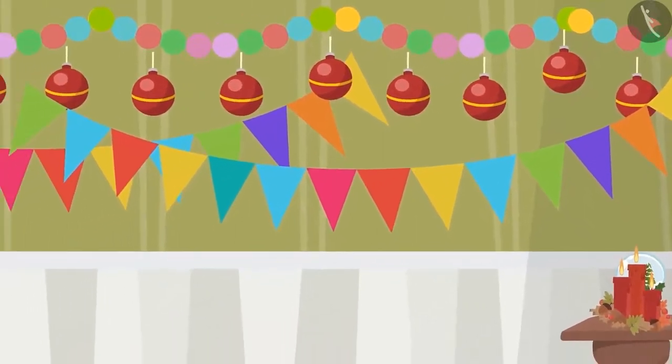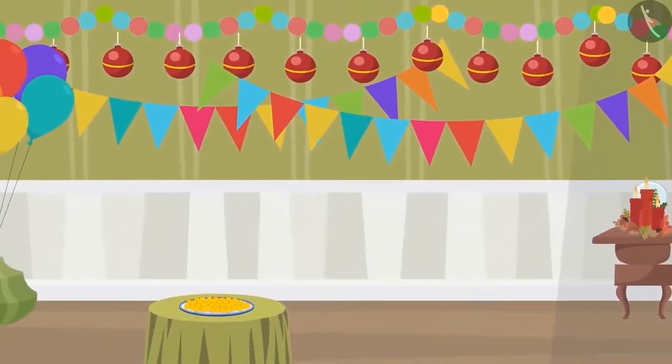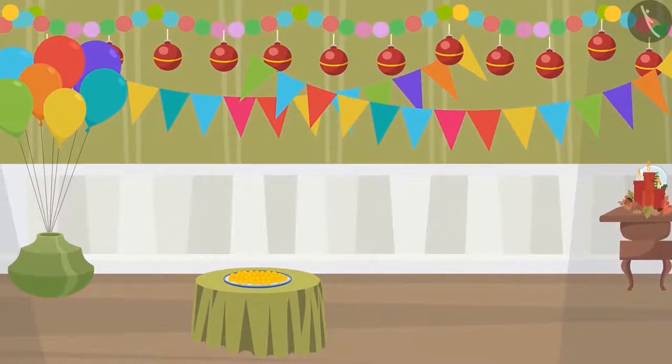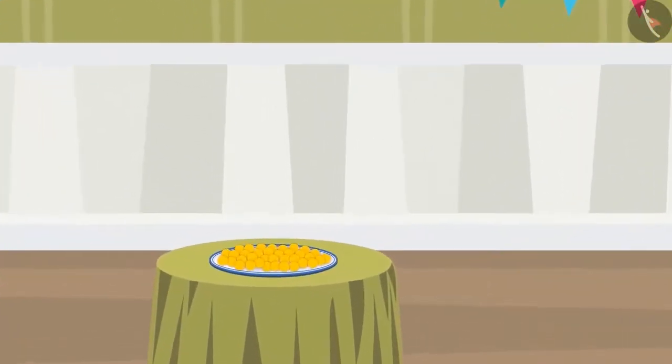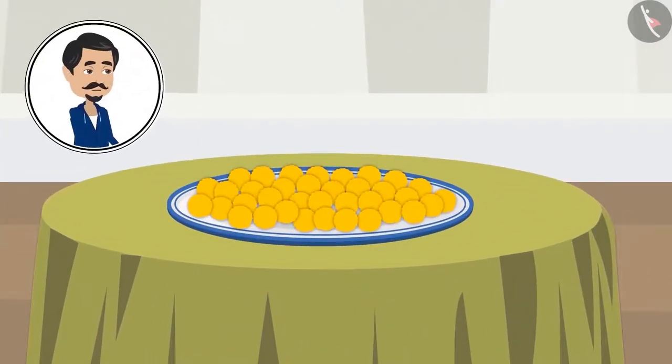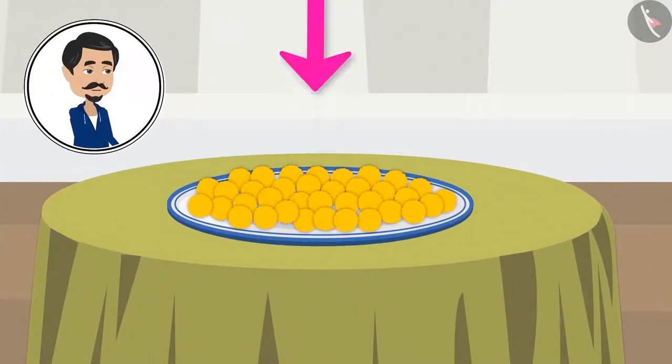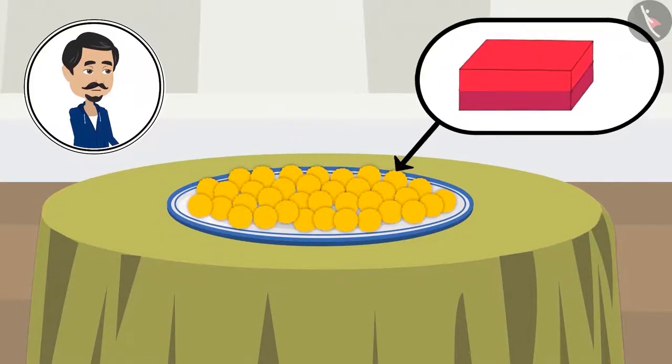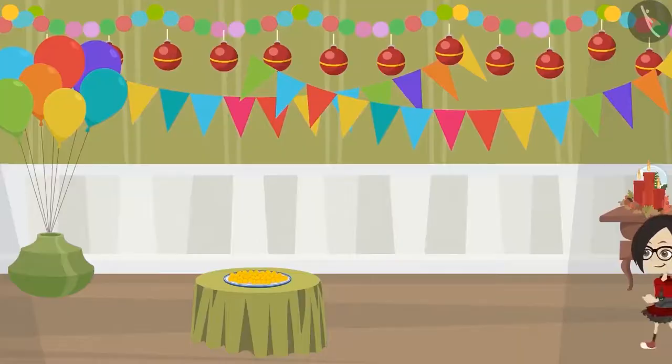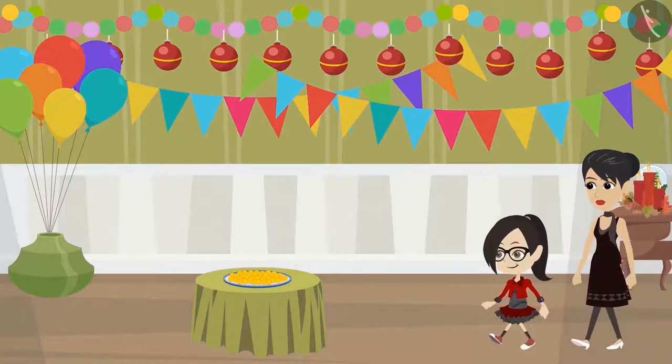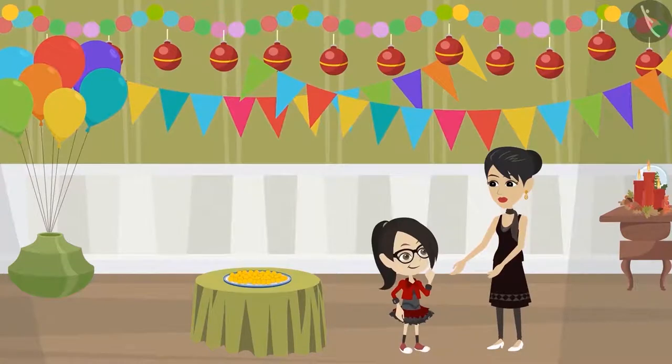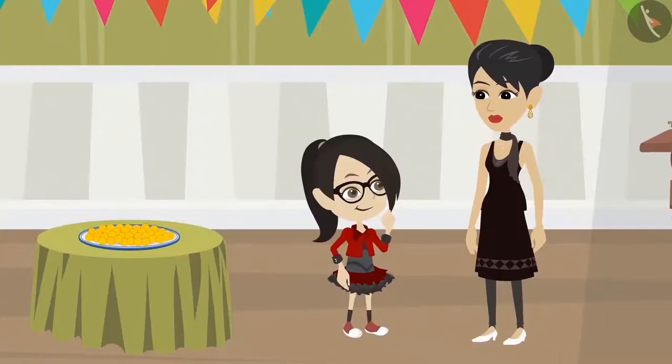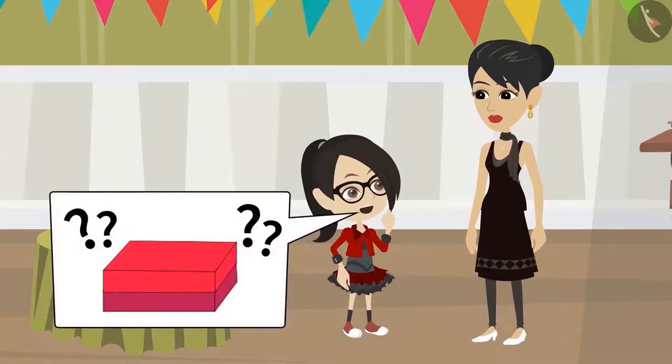Today there is a party at Vandana's house, and some guests are going to come. Ladoos are to be given to the guests on the way back. Papa brought the ladoos from the market but forgot to bring the boxes to keep them. Mammi asks Vandana to bring boxes from the market. Vandana asks, Mammi, how many boxes should I get?